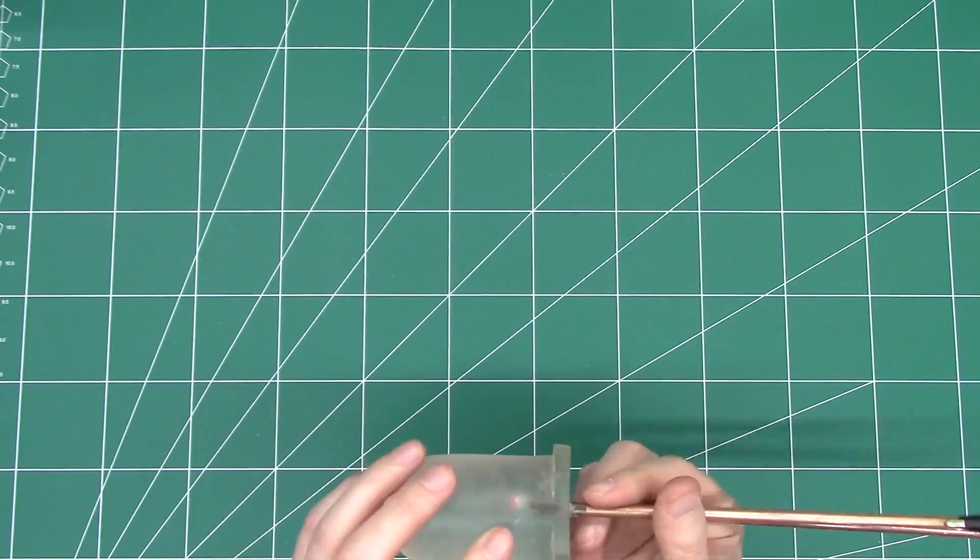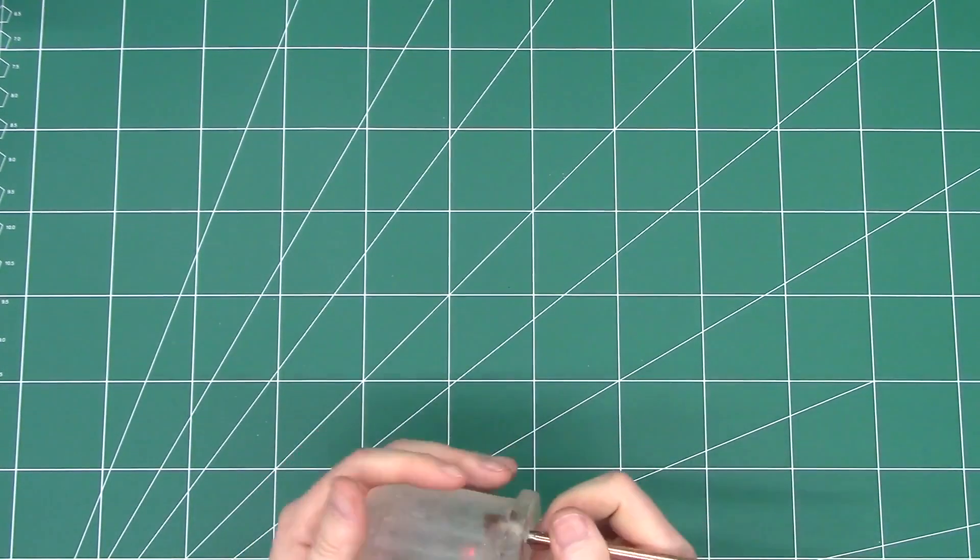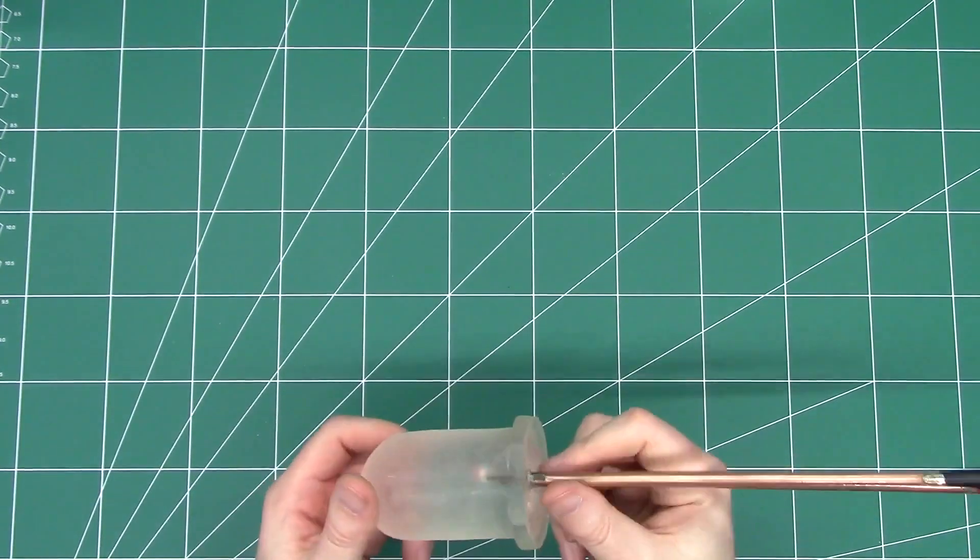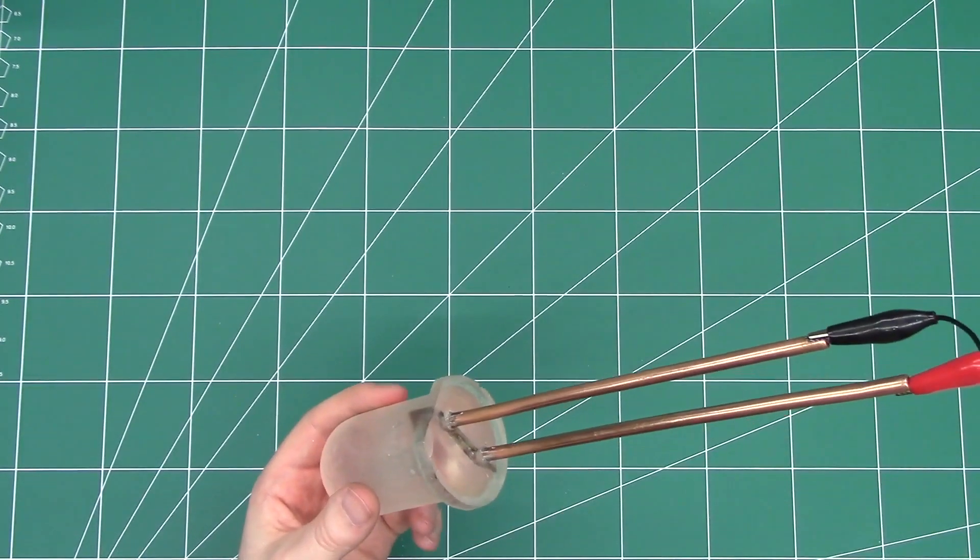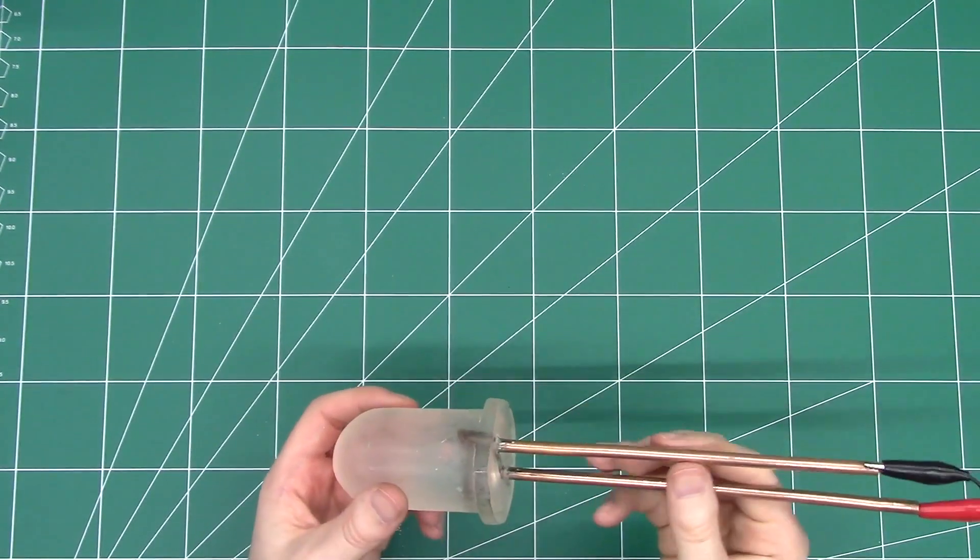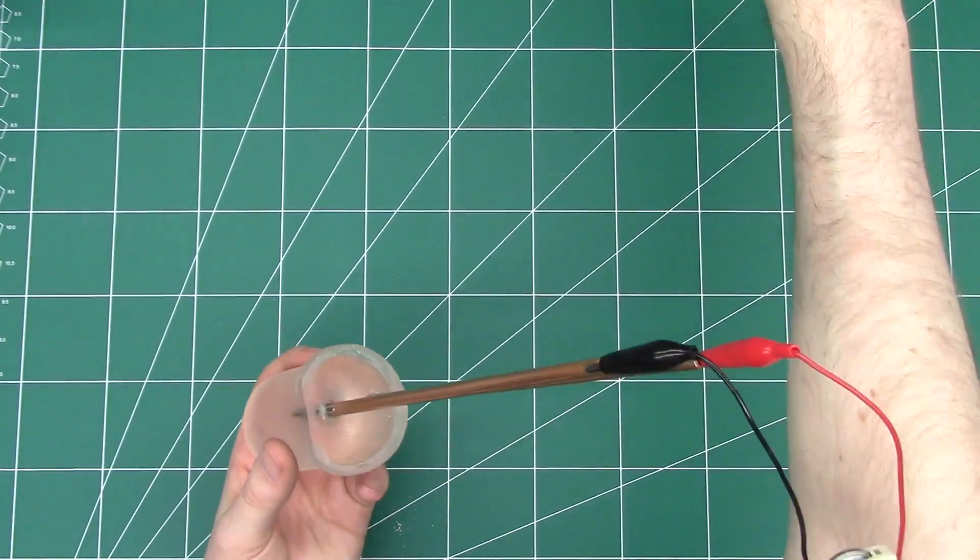And so I ended up just filing that down. As I said, I scuffed the outside of this up with file to give a bit more of a diffusing effect. If I was doing this again, which I am going to look into doing it again, I would probably 3D print my kind of master shape.